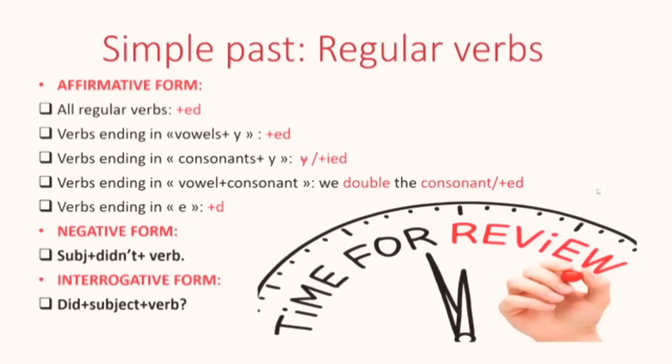Now we don't start with the subject. We start with the verb did in the past simple. It's in the past simple, the verb to do, plus subject, plus verb. The verb again does not change here. We don't add ed or ied, nothing. We change nothing because we already have an auxiliary at the beginning. Now let's practice these forms.